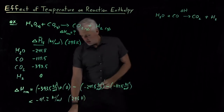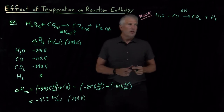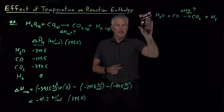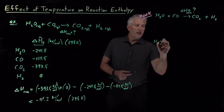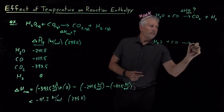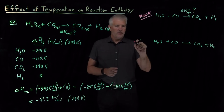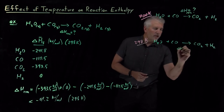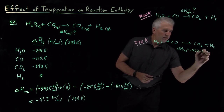Let's say we're interested in knowing the enthalpy of this reaction at a more industrially relevant temperature: 700 Kelvin, which is a temperature more like where it would be performed when actually producing hydrogen gas. What we know is the enthalpy of this reaction at 298 Kelvin: negative 41.2 kilojoules per mole.